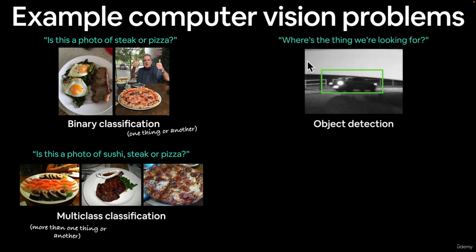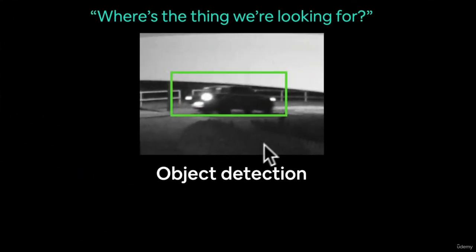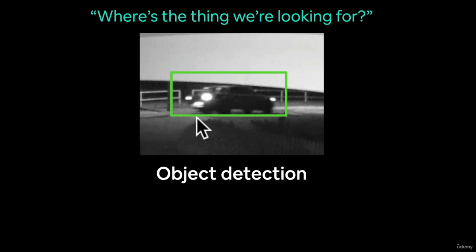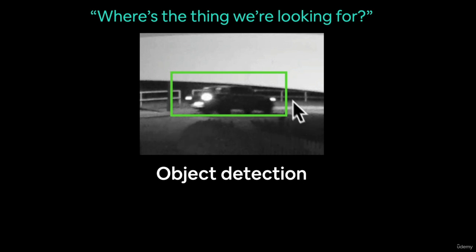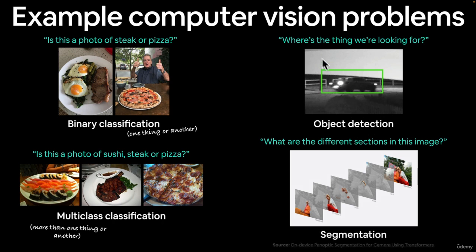Another example of computer vision is object detection — answering the question: where is the thing we're looking for? For example, a car caught on a security camera — they did a hit and run on my car. I went to my neighbor's house, looked at the security footage, and found this car. Potentially you could design a machine learning model to detect that specific type of car and flag it if it ever appears again. That's object detection: finding something in an image.